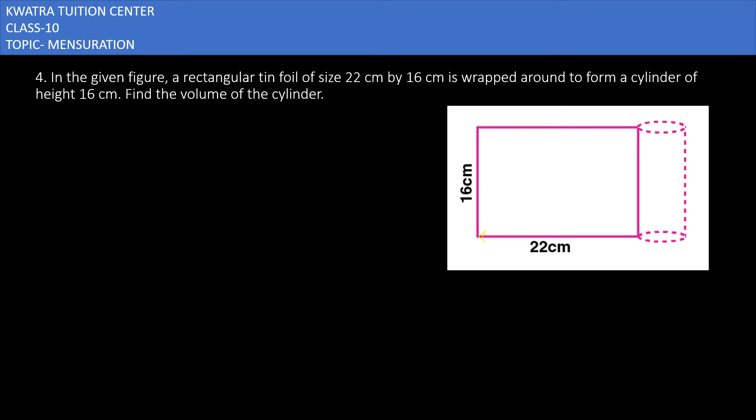So we have 22 centimeter marked. It will be converted to the circumference of the circle. Look here, whether 22 can be compared to the circumference of the circle. So it is 2πr, meaning it is equal to 22 centimeter, not 16.